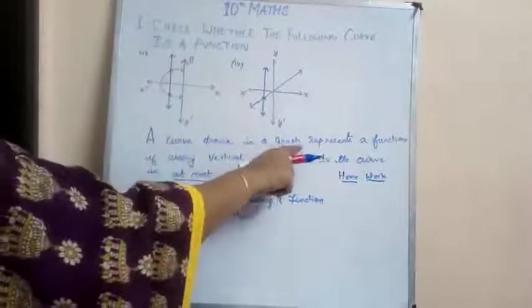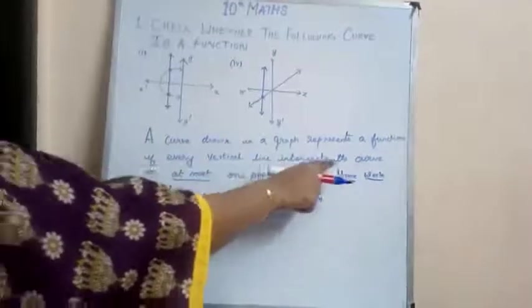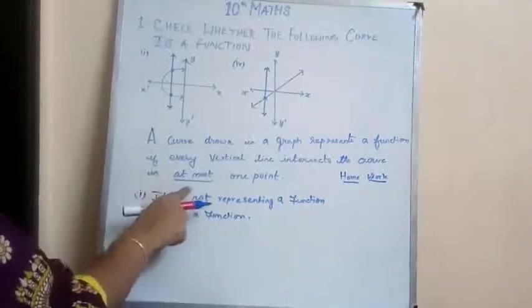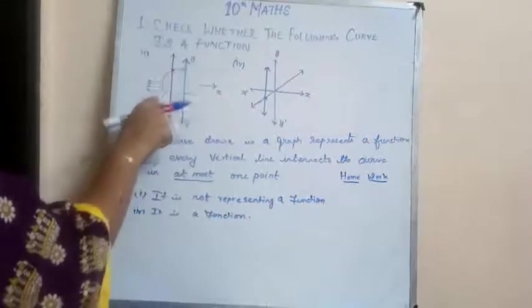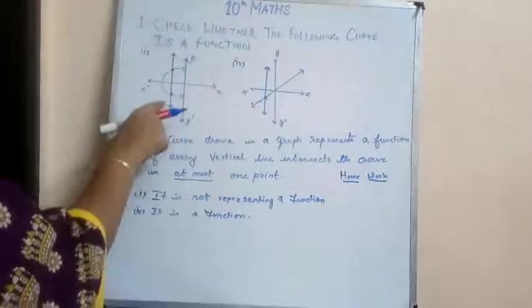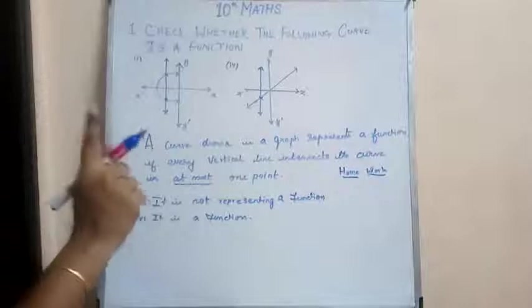A curve drawn in the graph represents a function if every vertical line intersecting the curve in at most one point. So at most one point means when you draw a vertical line, the point of intersection should be at most only one point.